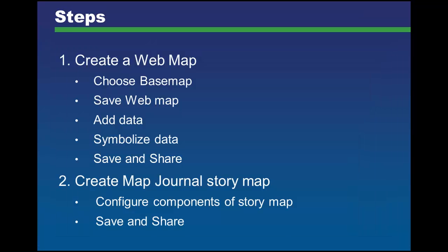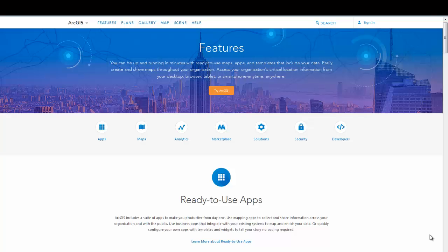The following steps are required to create your map journal story map. First, you must create a web map: choose your base map, save your web map, add data, symbolize data, and then save and share your web map. Second, create your map journal story map, where you will configure the components including adding text, images, videos, and maps. Once you're done, click Save and share your story map. Let's get started by setting up your web map and saving it. It's important to save your work throughout this tutorial.